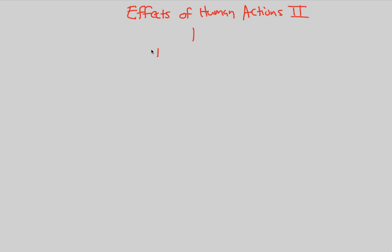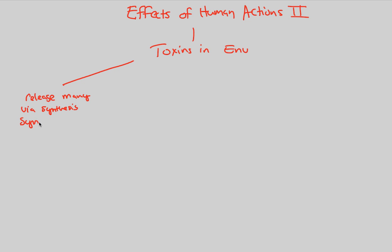This flowchart will be devoted to toxins in the environment as a result of human actions. Human actions are going to consequentially release many toxins via synthesis — when we make synthetic compounds, that's why they're called synthetic, because they're synthesized. When we as humans make synthetic compounds through synthesis, we are going to release many toxins into the environment.